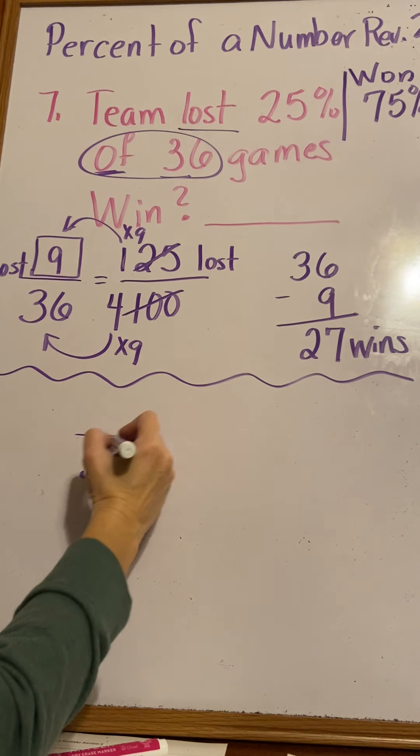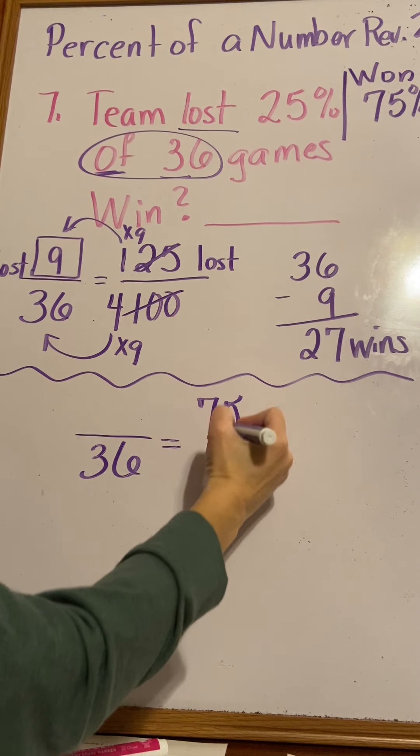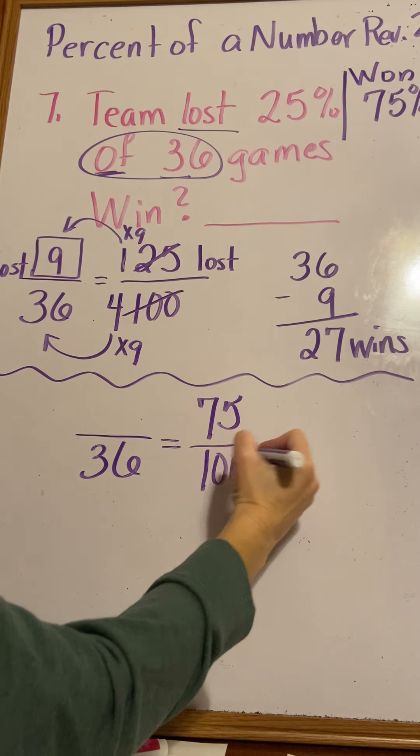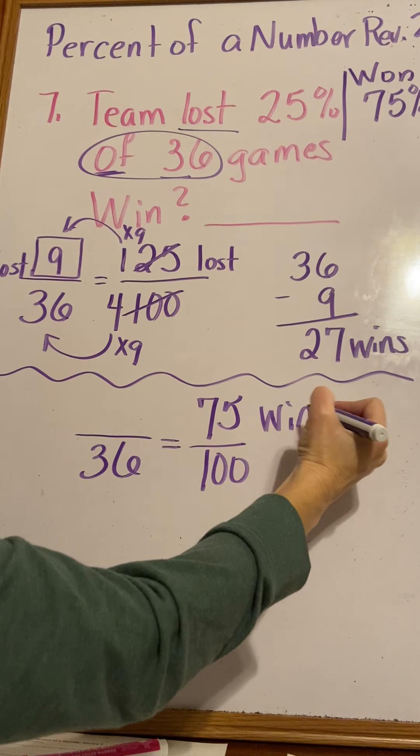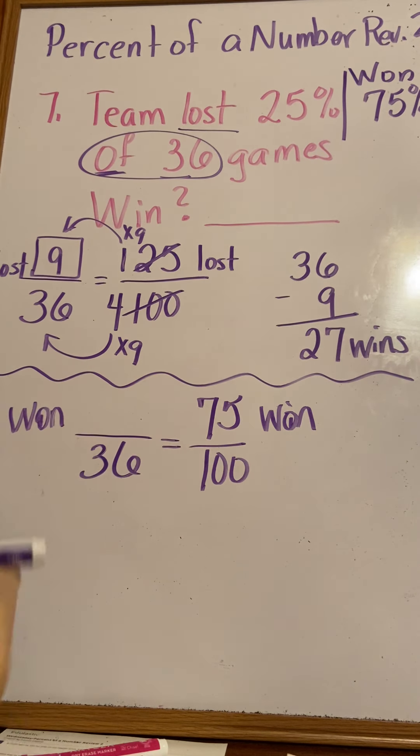They played 36 games - that goes on the bottom. And they won 75%. These are the games that they won, so we're going to solve this for how many games they won. 36 won't go into 100 still, so let's simplify this.